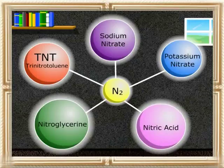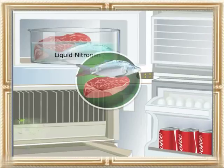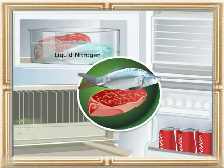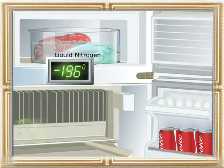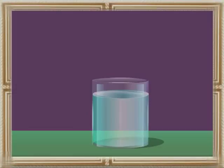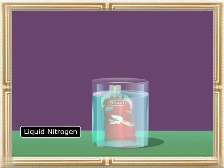Liquid nitrogen is used as a refrigerant for food like meat and fish, because it can provide temperatures below minus 196 degrees Celsius. Liquid nitrogen is also used for storage of blood in hospitals.